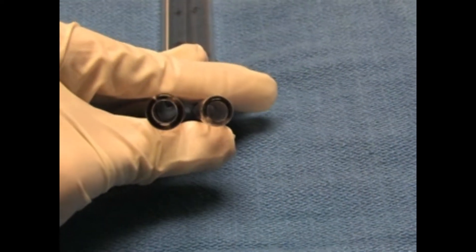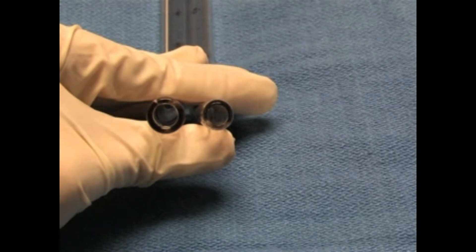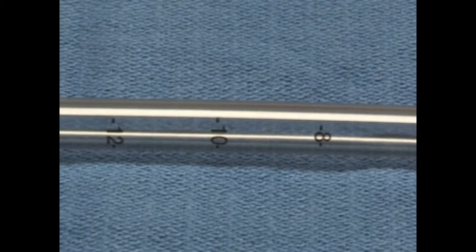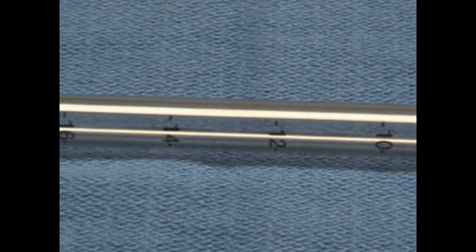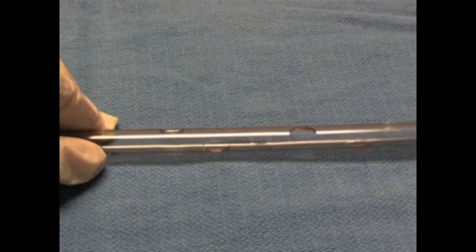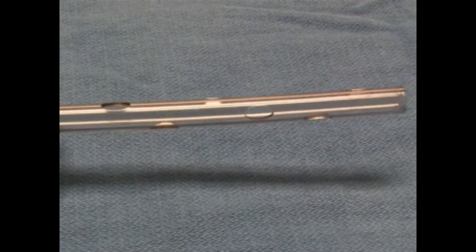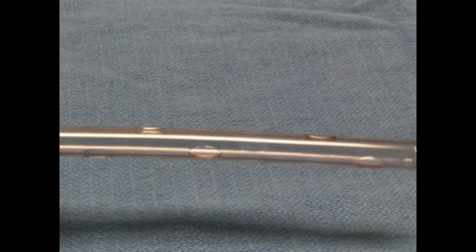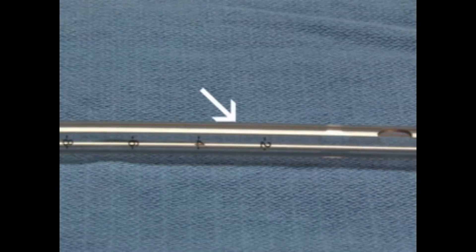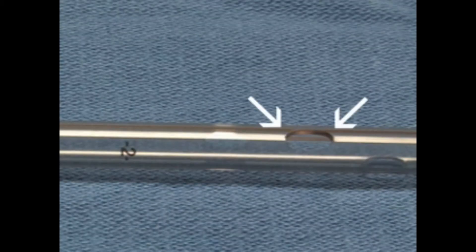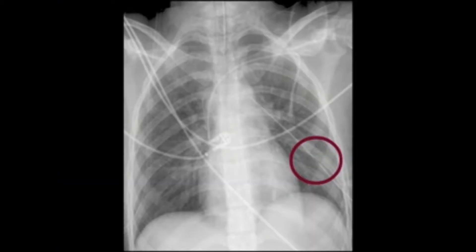The chest tube is sized according to its internal diameter. The length of the tube is marked with numbers to indicate distance into the chest wall. Additionally, there are several drainage holes at the distal end. A radio-opaque stripe runs along the length of the tube and outlines the most proximal drainage hole.